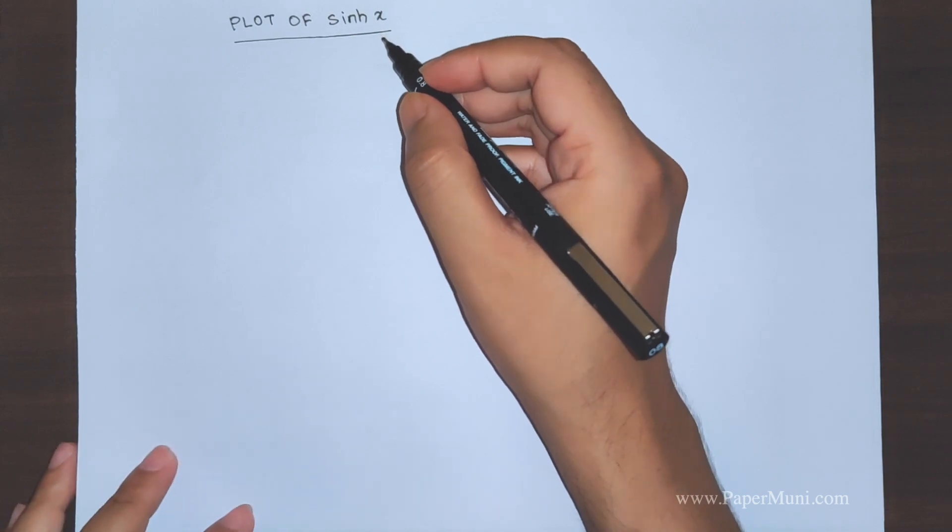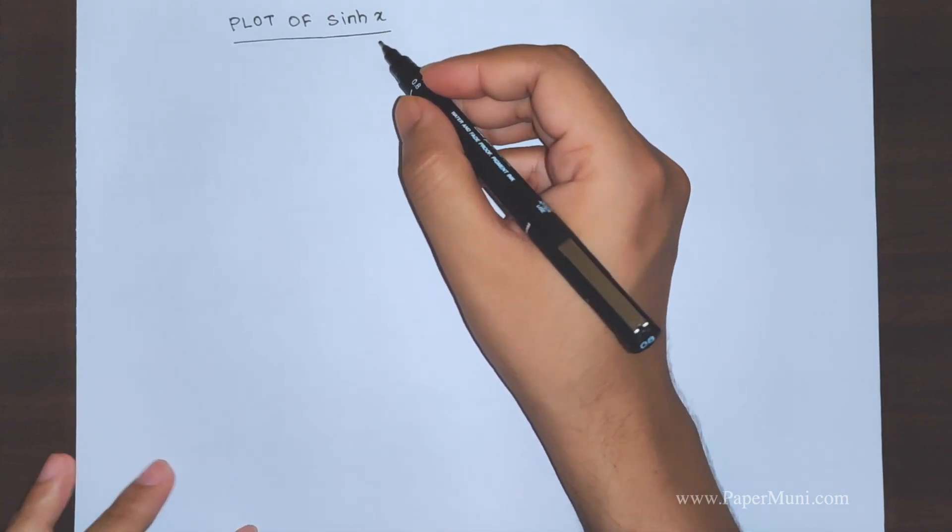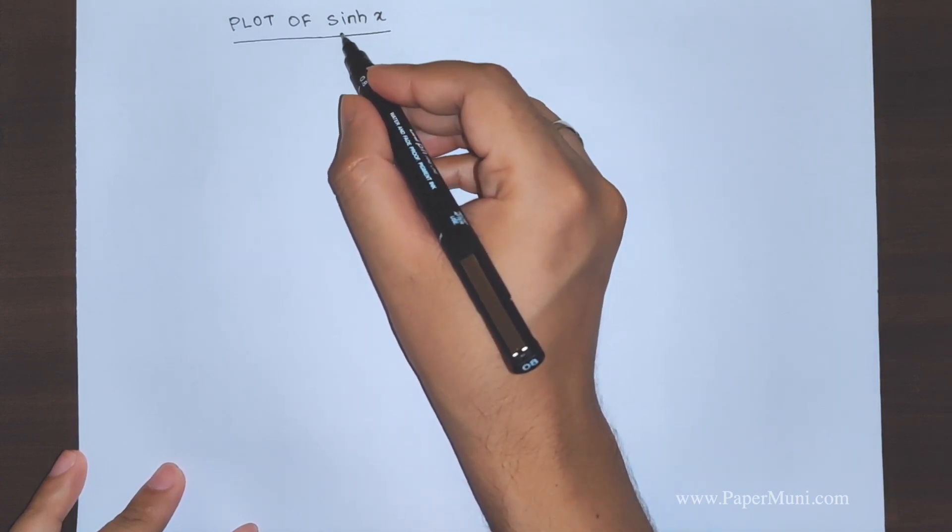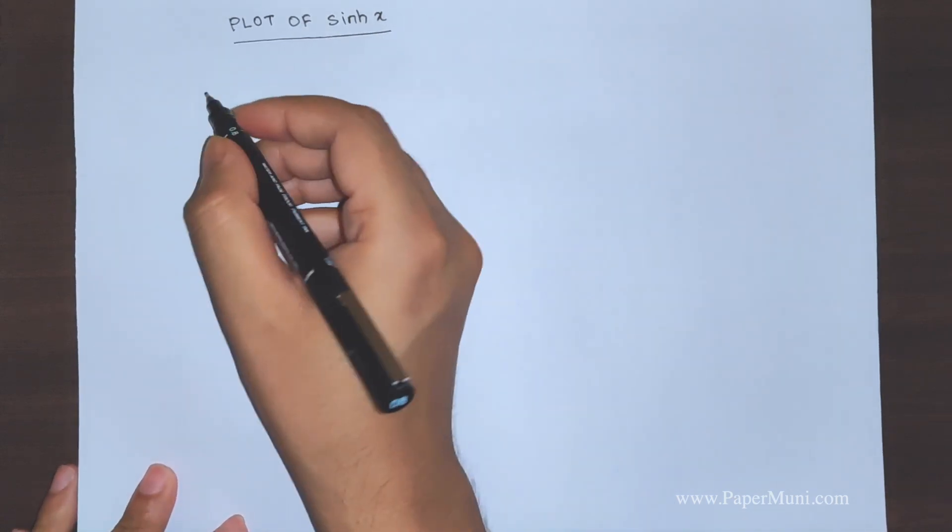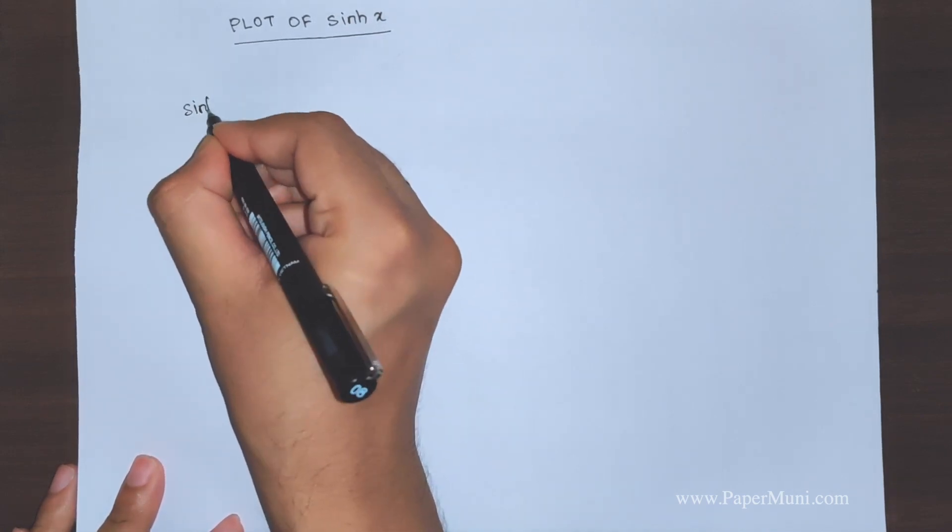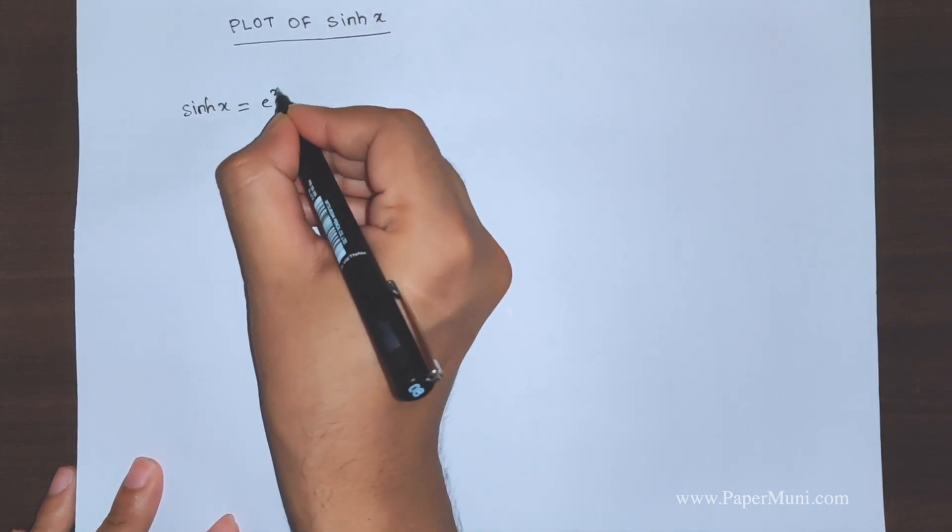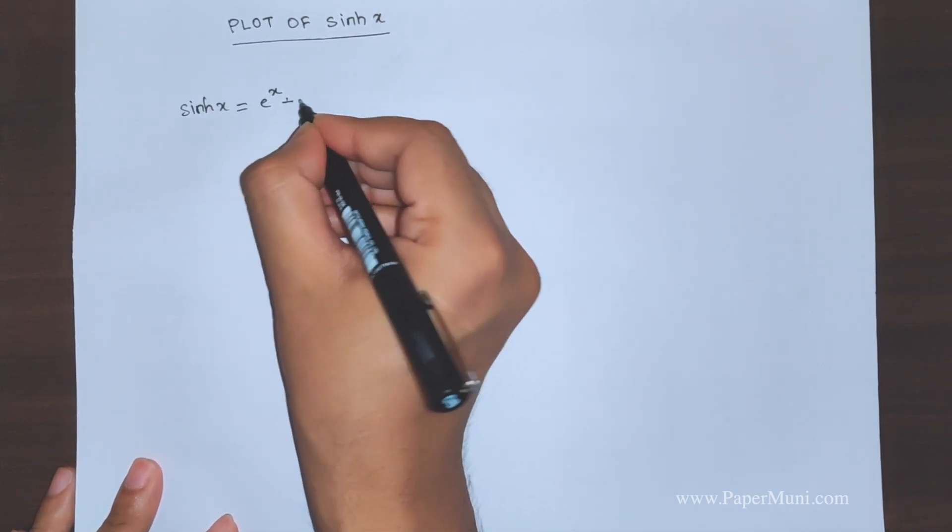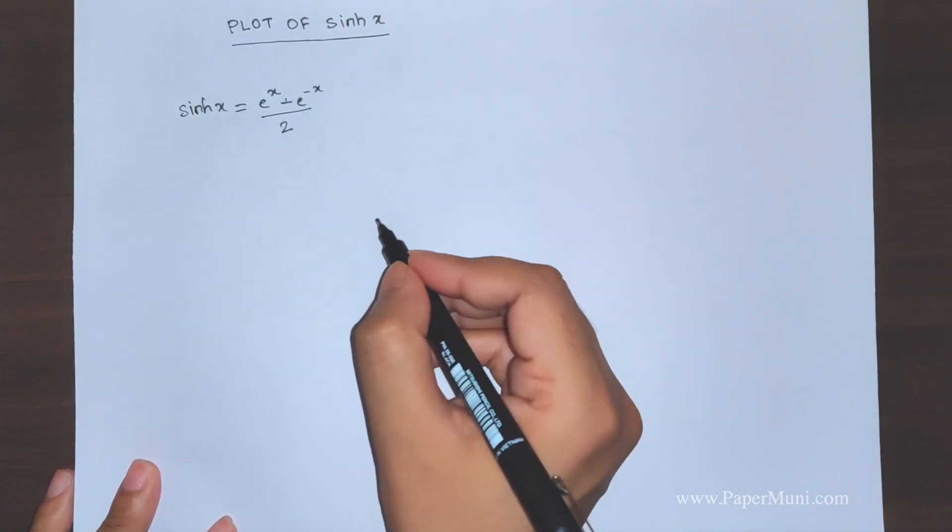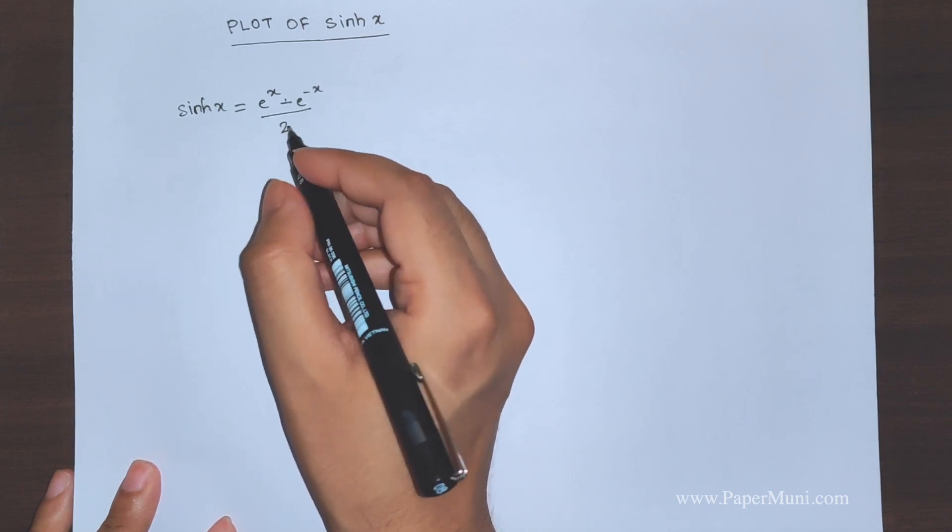In this video we'll discuss about how to plot sine hyperbolic x, also pronounced sinh x. We need to know that we can write this as exponential x minus exponential minus x by 2, so this is how it's related to exponential.